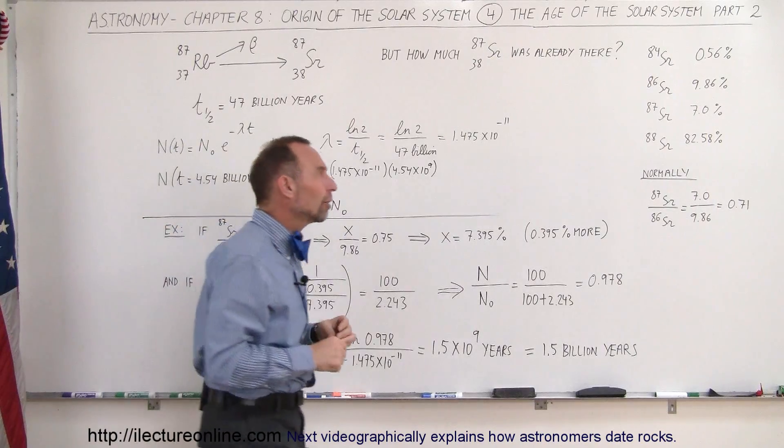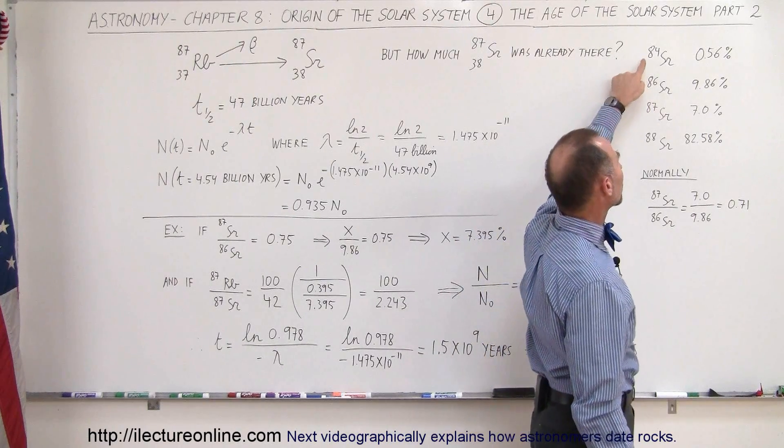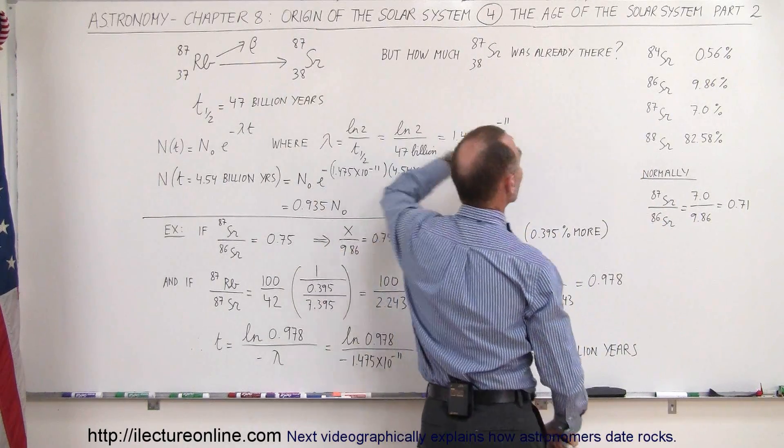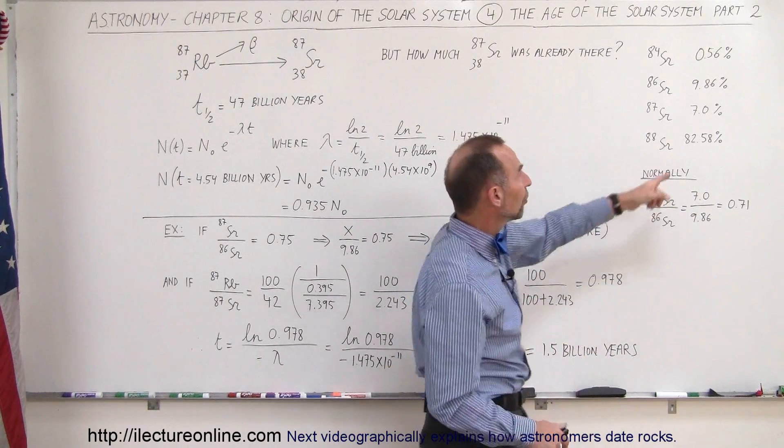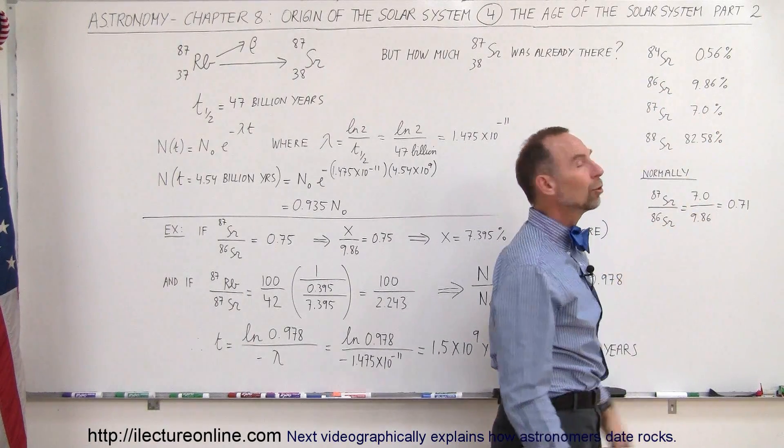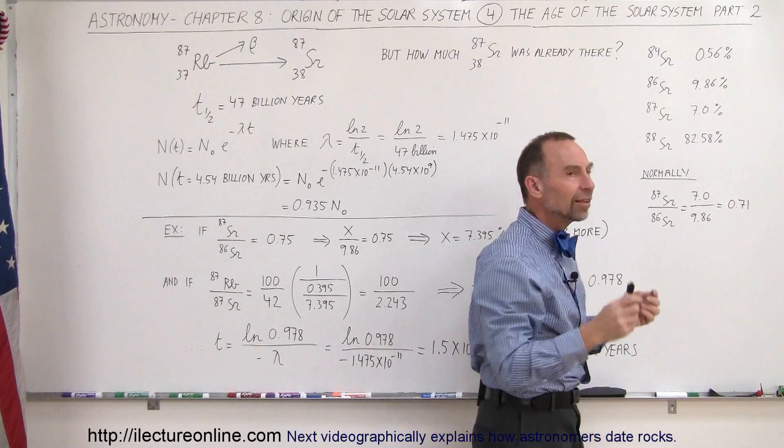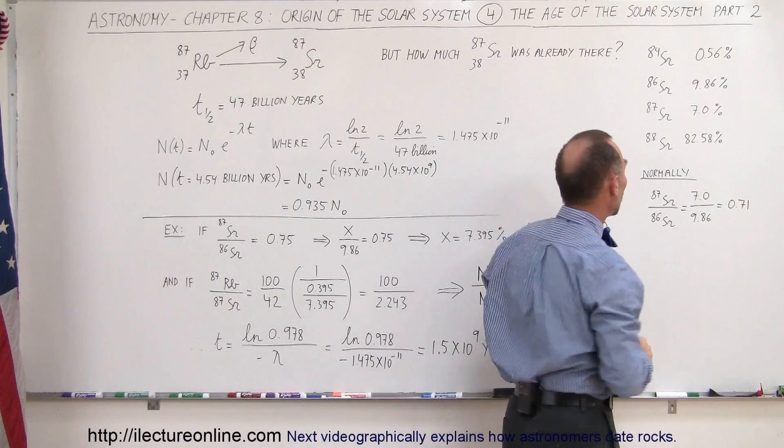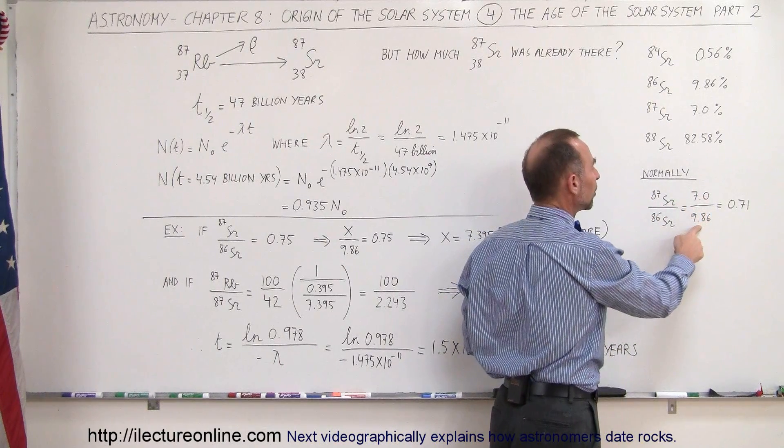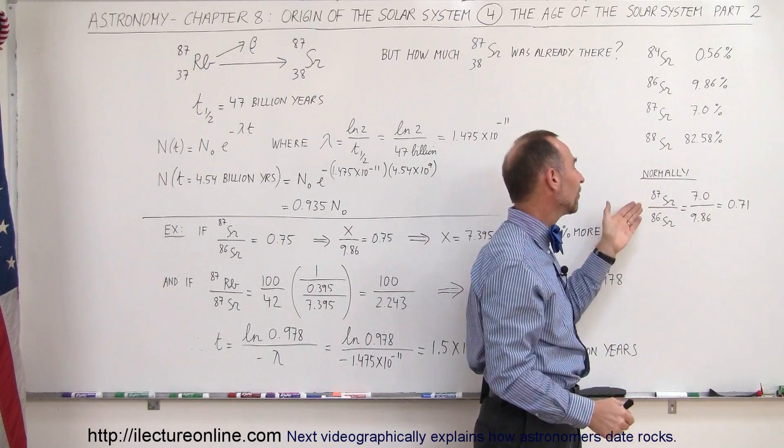So when we look in the crust of the Earth and we look for all the different isotopes of Strontium, we find that there's four of them that are relatively common. We have Strontium-84, 86, 87, and 88. Notice that all of them have the same number of protons, but they have different numbers of neutrons. And notice the relative abundance in percent, 0.56%, 9.86%, 7%, and 82.58%. Now Strontium-86 and 87 are stable, so we can figure out the relative abundance in nature today. So when we do a ratio of Strontium-87 to Strontium-86, that would be 7% divided by 9.86%. So normally you would expect a ratio of 0.71 between Strontium-87 and Strontium-86.